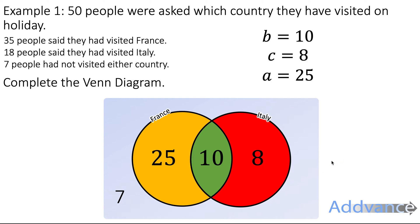Let's just check it all makes sense. So we start by looking at people who have visited France. 25 and 10. Yes that's 35 who have visited France. 10 and 8 people have visited Italy. That's 18. That agrees with the question. And then 7 people have visited neither country. Finally, let's add them all together. 7 plus 25 plus 10 plus 8 is equal to 50. If you add them all together it does make 50. So every part of our Venn diagram agrees with the question. We've got it right.